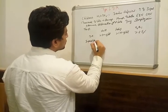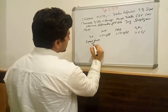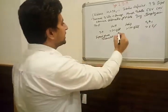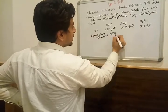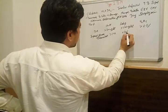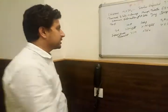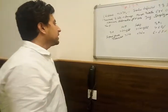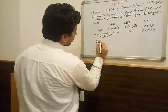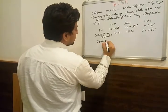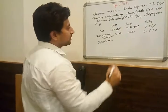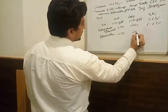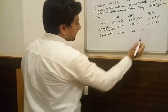Impaired glucose tolerance is defined when 2-hour PP is more than 140 mg/dL and fasting is less than 126 mg/dL. HbA1c is between 6% and 6.5%. In impaired fasting glucose, the 2-hour PP is less than 140, but fasting is between 110 and 126 mg/dL.